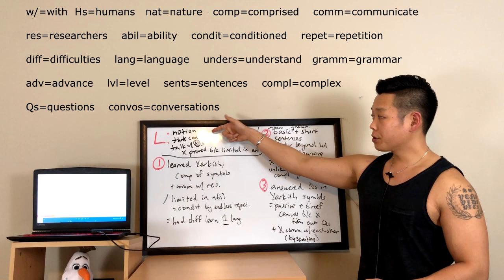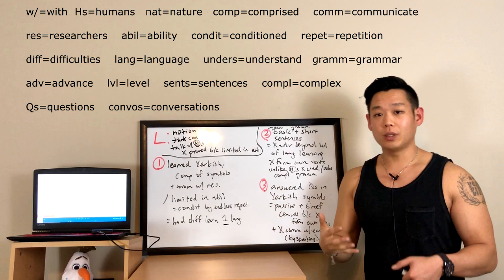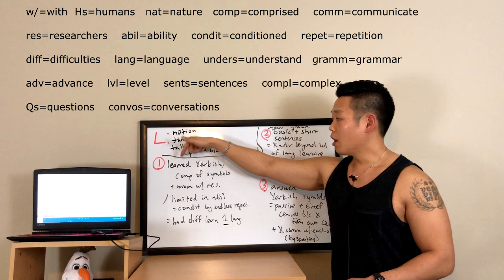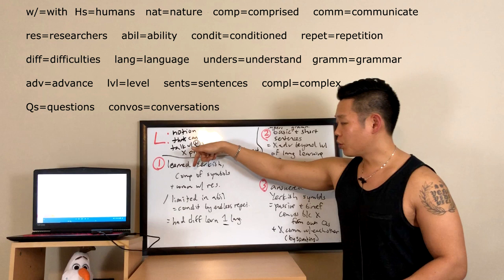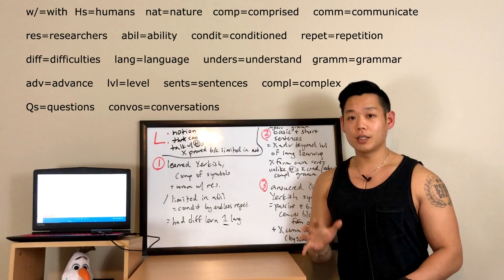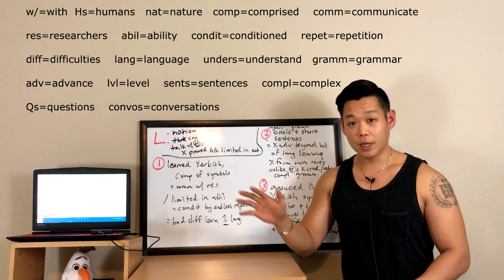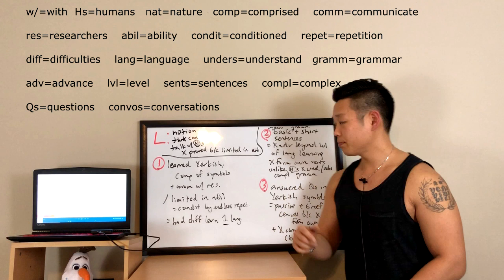Now let's take a look at my notes. The professor said in the beginning of the lecture that the notion that chimpanzees can talk with humans has yet to be fully proved because they are naturally limited. For the first argument, the professor said that Lana learned Yerkish, comprised of symbols, and could communicate with researchers, but since she was so limited she had to be conditioned by endless repetitions of the same words and symbols — basically, she didn't actually learn the language, she just memorized different pictures. As a result, unlike human beings, Lana had a lot of difficulty learning even one language.